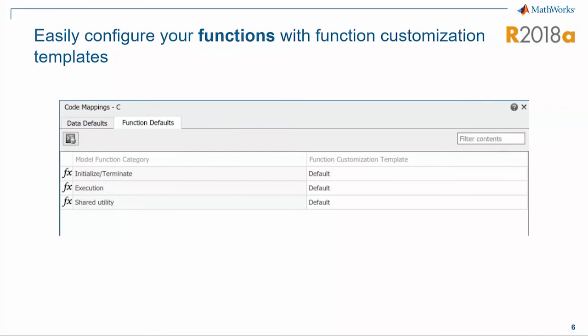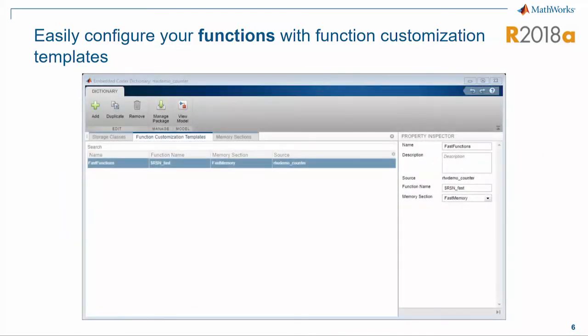We've also been working on the ability to customize functions. Next to our data code mappings, we've added function mappings. We've also added the Embedded Coder dictionary, which includes something called function customization templates, making it really easy to customize your functions. In this case, I've created a 'fast' function customization, added 'fast' to the function name, and we've also added a memory sections panel to easily change the memory section of your functions.